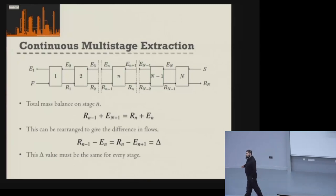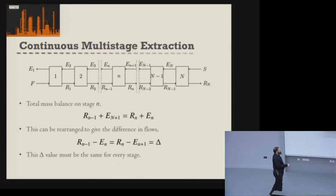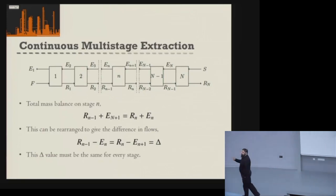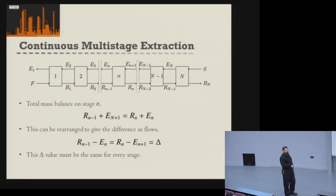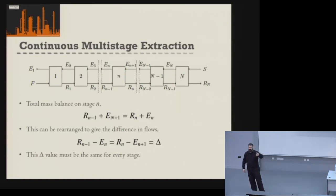With liquid-liquid extraction systems, we think about what's called the difference in flows, defined as the difference between the raffinate and the extract on one side compared to the other side. If we rearrange our total mass balance for that stage, we find that the difference in flows at either side of the stage is equal to a value delta. That difference in flow value delta never changes between the stages, because every flow pair has the same difference.